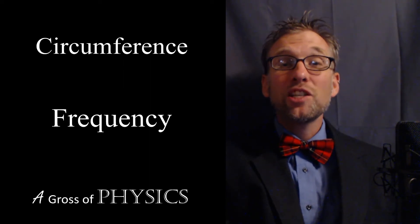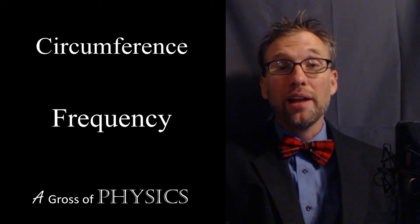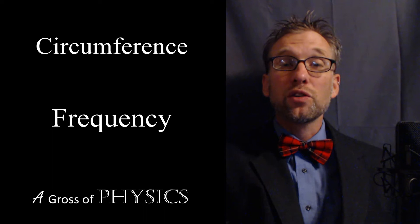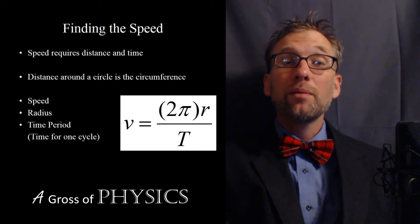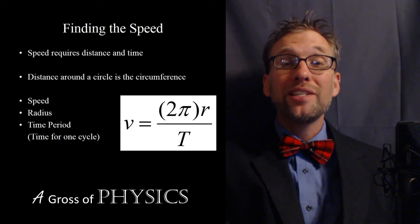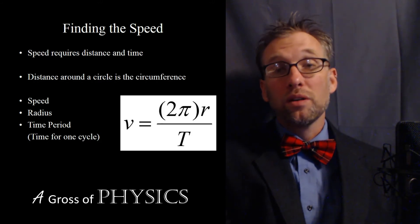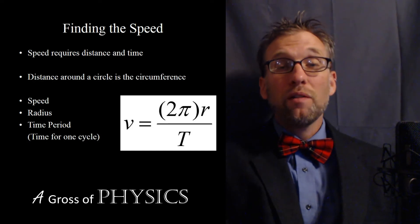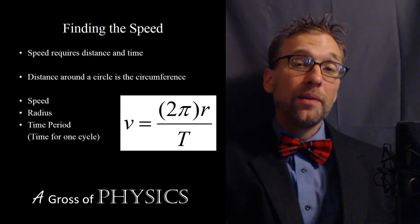In a circle, the distance traveled around the outside is called the circumference. If we know the circumference equation — 2πr — we can use that for d, and then use the time period of the circle for t. We just find d over t to calculate the speed.